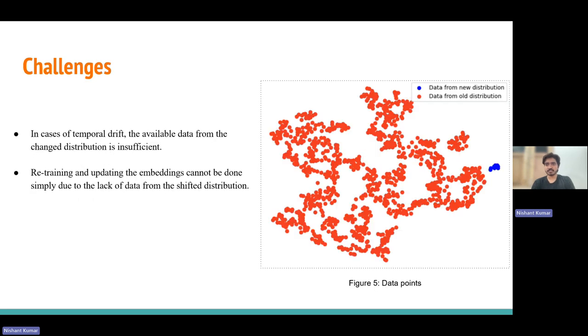But the challenge is, in situations of temporal drift, the existing data from the older distribution is inadequate. Retraining and updating the embeddings is not straightforward due to the scarcity of data from the modified distribution.